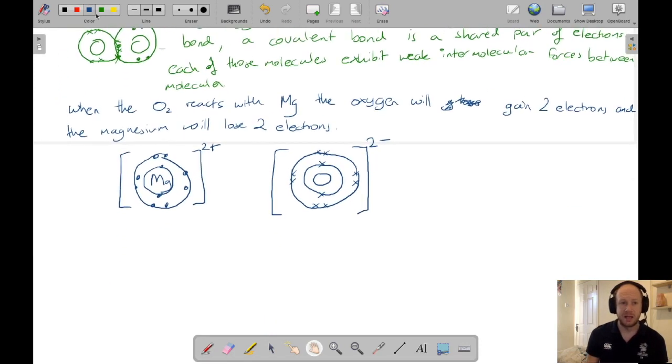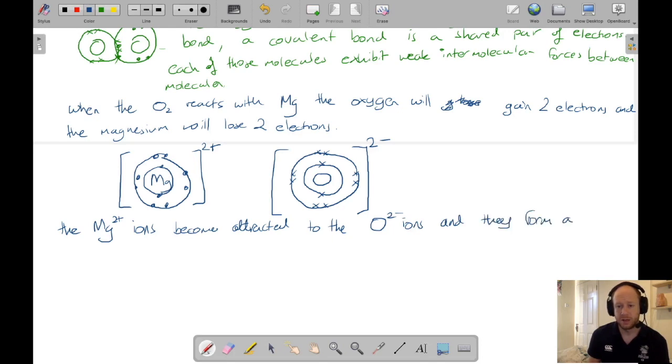And then what can we say? Well, we just need to talk about what happens then. And then the magnesium 2 plus ions become attracted to the oxygen 2 minus ions, and they form a giant ionic lattice. And that is how to answer that question perfectly.